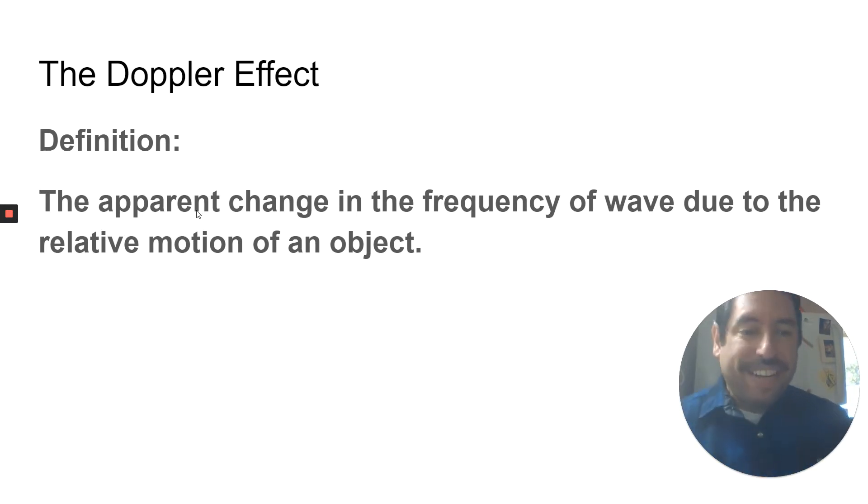So the actual definition of the Doppler effect is the apparent change in frequency of a wave due to the relative motion of an object. So the frequency of the horn or the car actually is not changing. It's an apparent change. It appears that it's changing. And the reason it appears to be changing is because the object is moving.